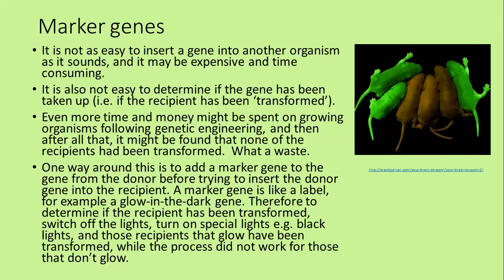...to see which plants had actually taken up the gene and been transformed, it would merely require switching off the normal light and switching on special lights such as black lights. Those recipients that did glow had been transformed, while the process didn't work for those that didn't glow. Here you can see some little rats — three of them have been transformed and three haven't. Only those three transformed ones would be used from then on.